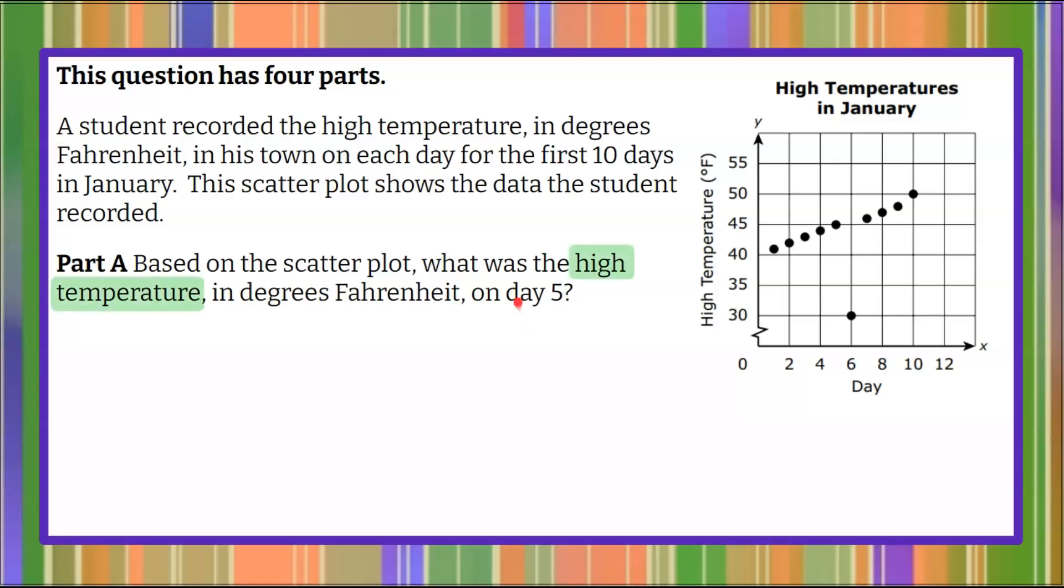Welcome back. Once again, we're looking for the high temperature on day 5 from our scatterplot. We're going to go over to our scatterplot and find day 5. Our x-axis is labeled days. We're going to go between 4 and 6, and here's day 5. We're going to travel up to the first data point that we come to on day 5, which is right here, and then we're going to travel to the y-axis, which represents our high temperature, and we can read that on day 5,